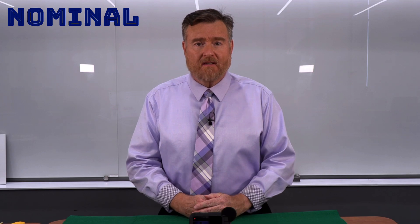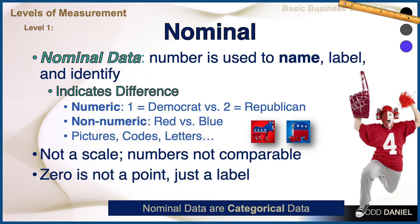We're going to begin with nominal level data. Nominal data are numbers that are used to name or label or identify. The number in nominal data simply indicates a difference. Nominal data could be numeric, such as using one for Democrat, two for Republican, or non-numeric, such as using red versus blue as colors, or using pictures like a donkey or an elephant, or codes or letters.